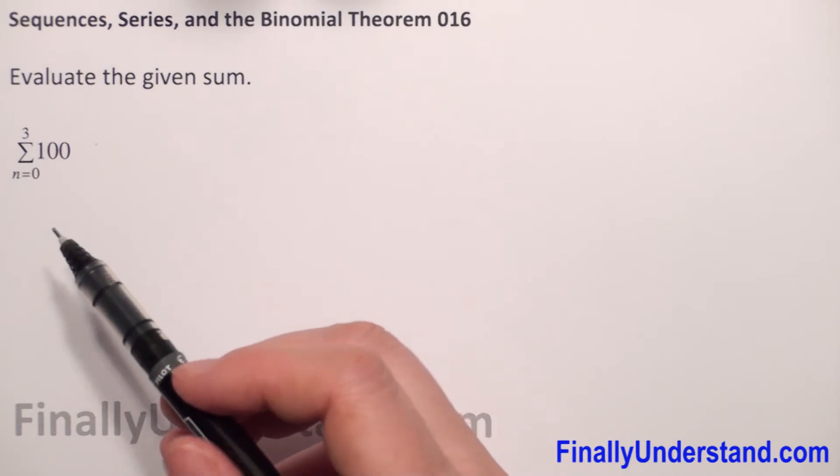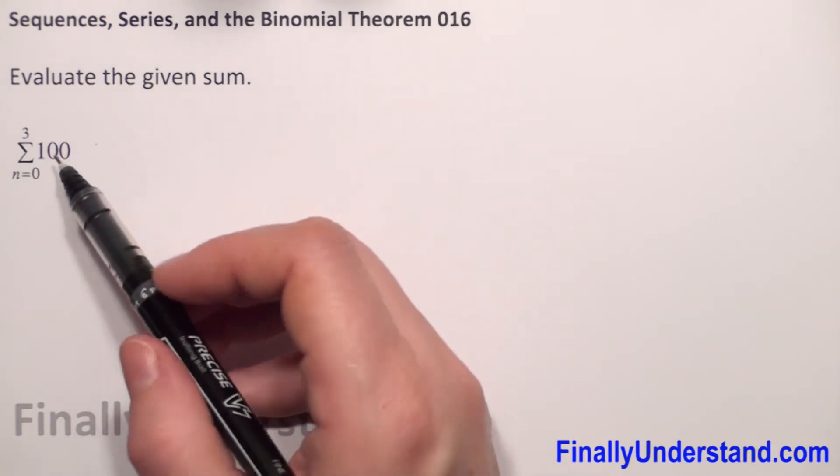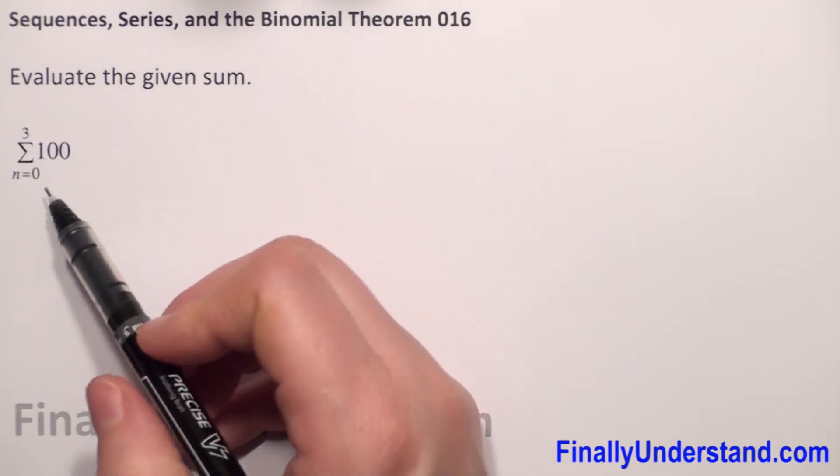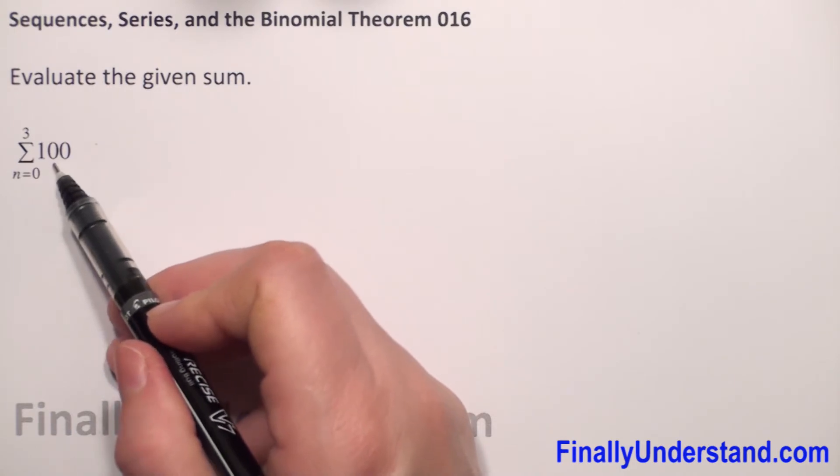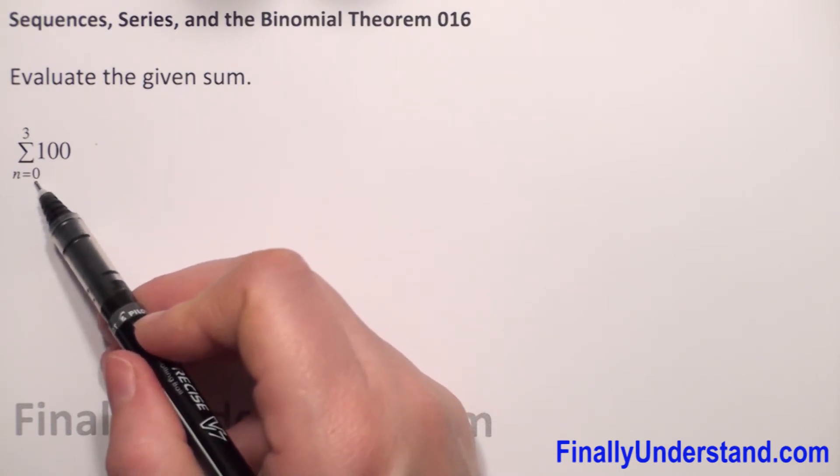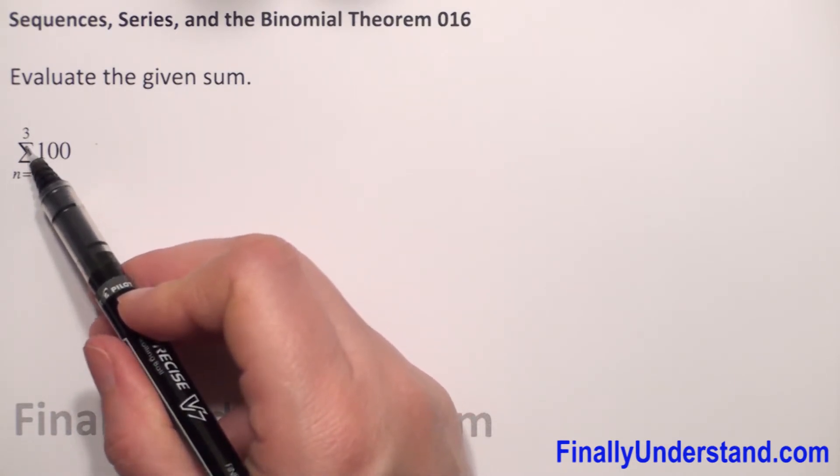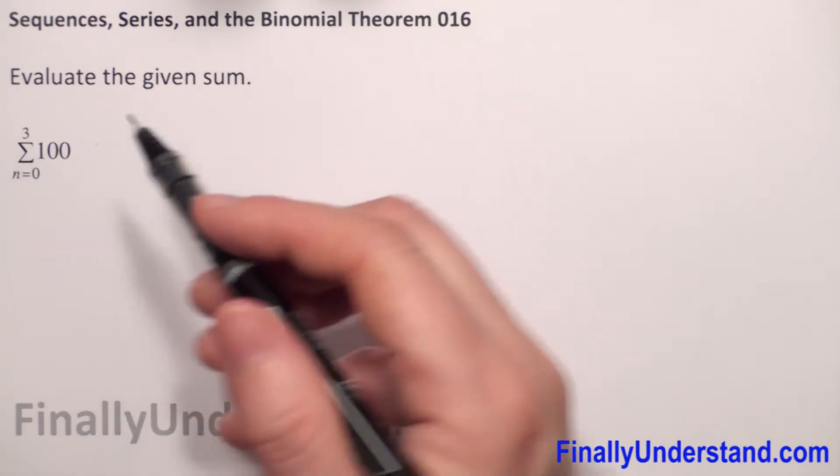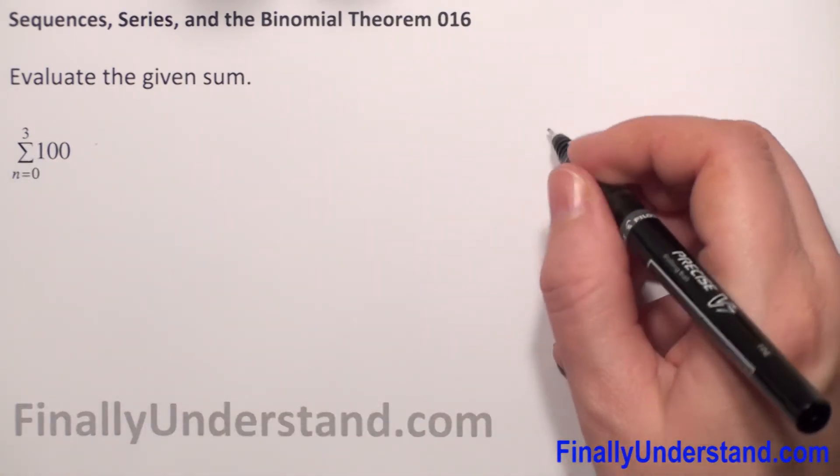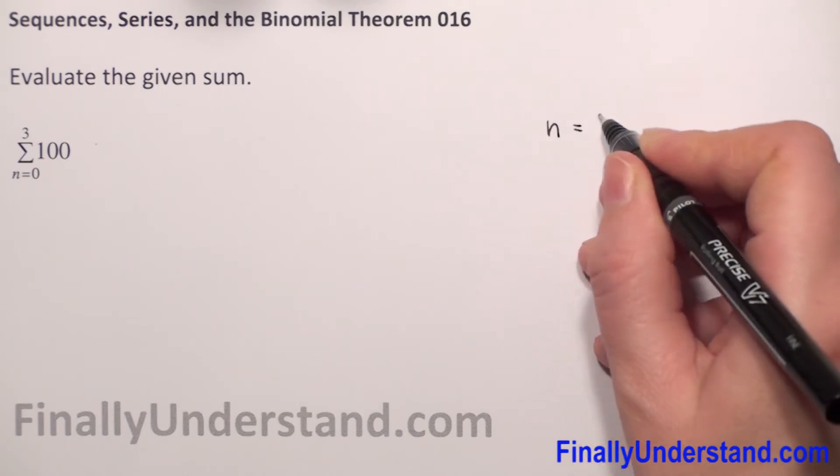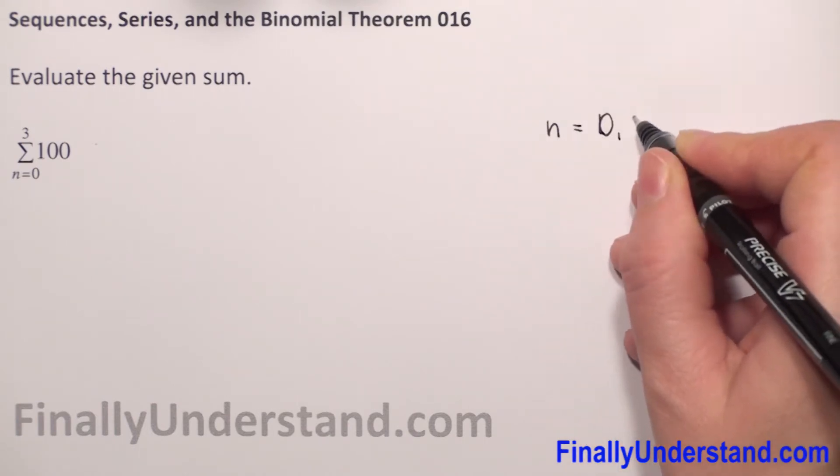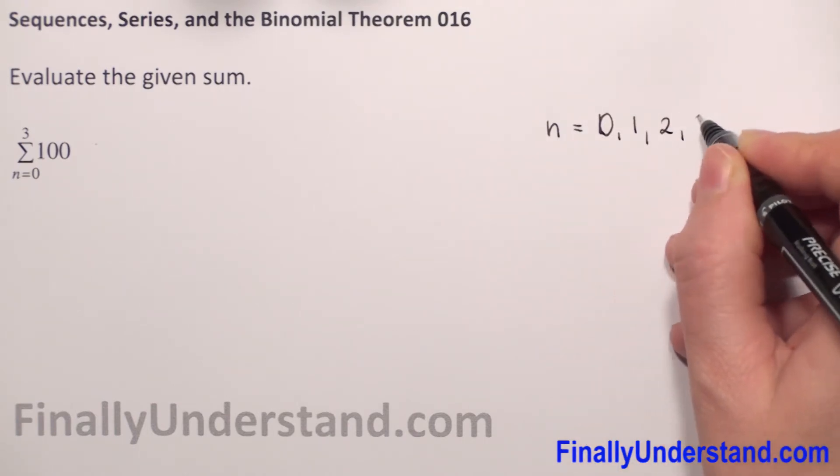So we have to find the sum of 100 from n equals 0 to 3. From n equals 0 to 3, it means we have to substitute n by 0, 1, 2, and 3.